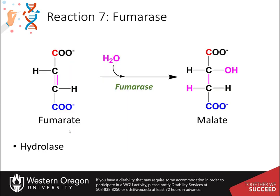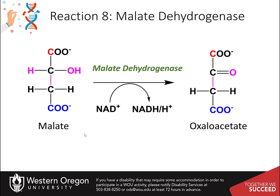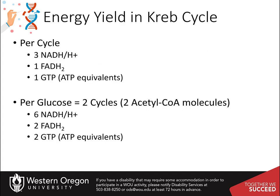In reaction VII, the lyase known as fumarase converts fumarate to malate. This enzyme is also a hydrolase, as water is incorporated into the final structure, shown in pink here. The final reaction, which we have visited in the gluconeogenic pathway, involves the oxidation of malate to form oxaloacetate. One final energy carrier molecule, NADH plus the proton, is formed.